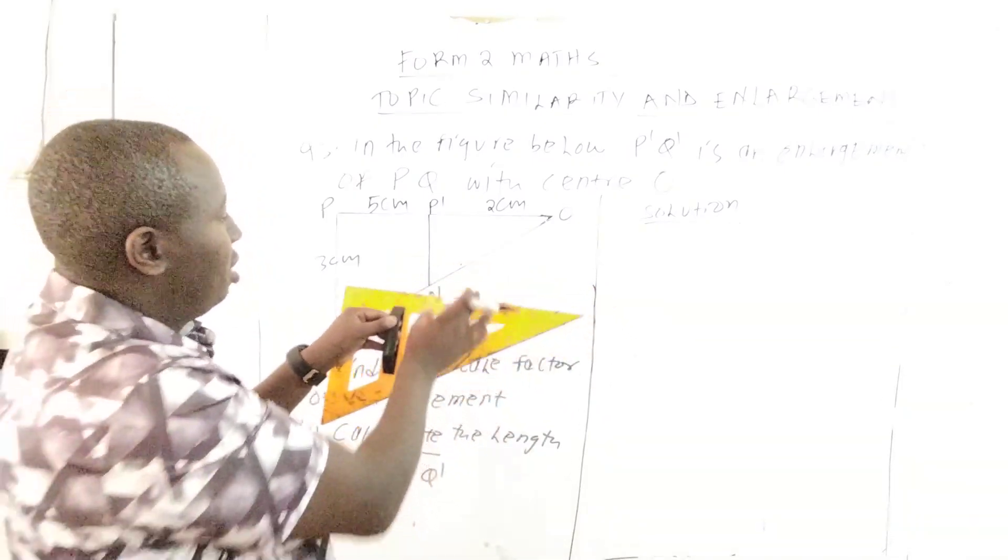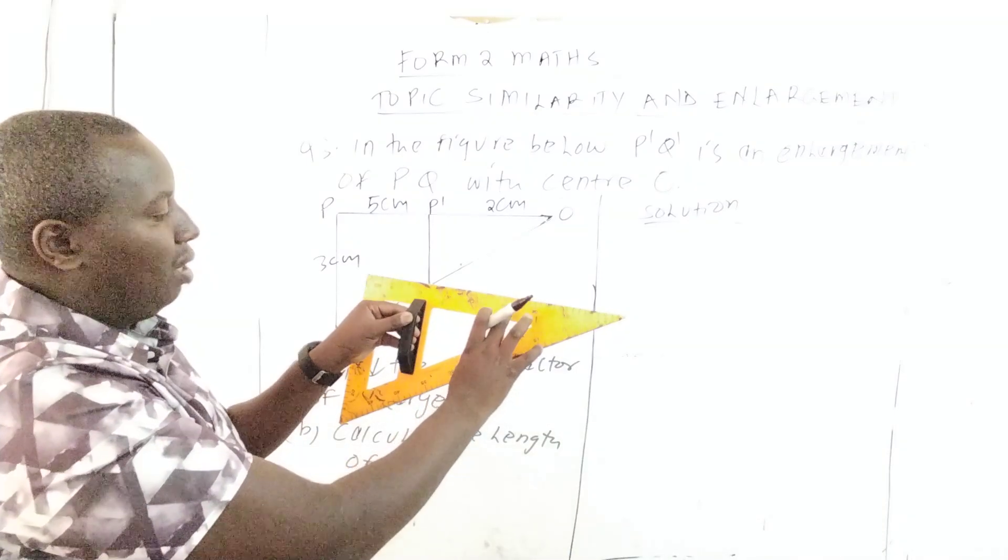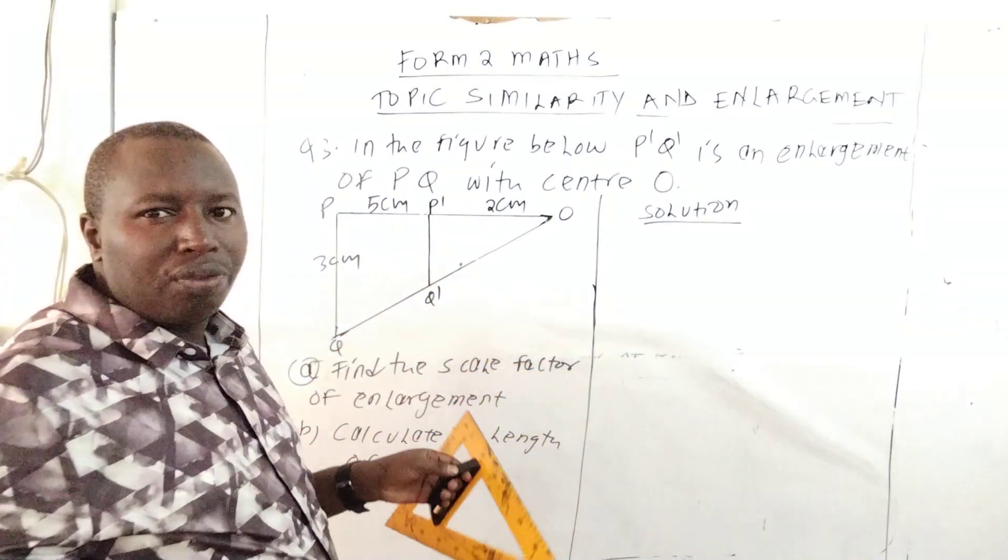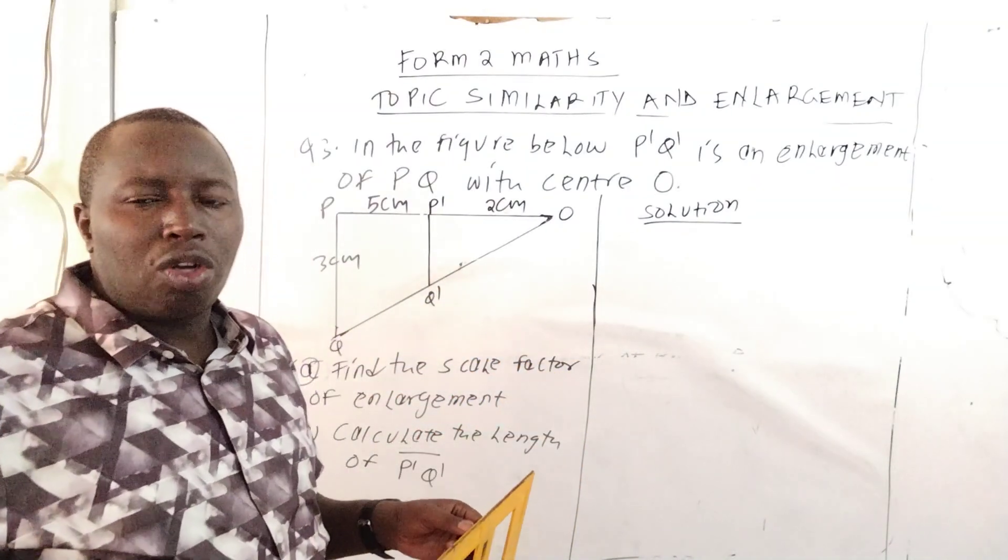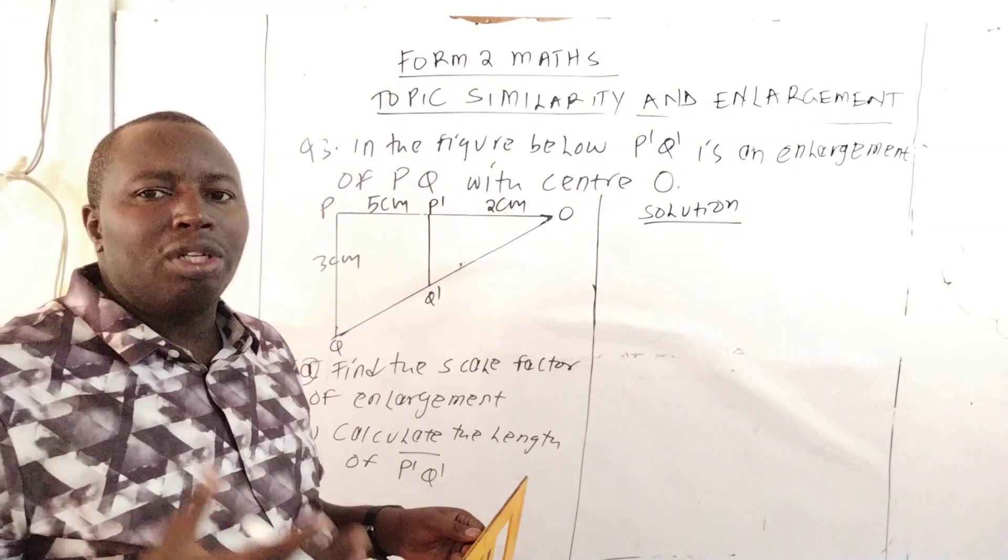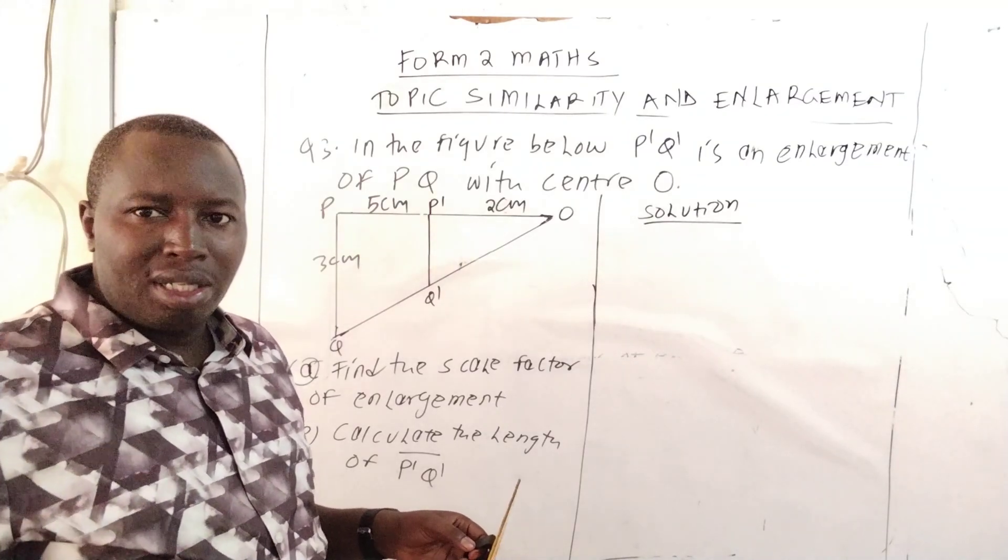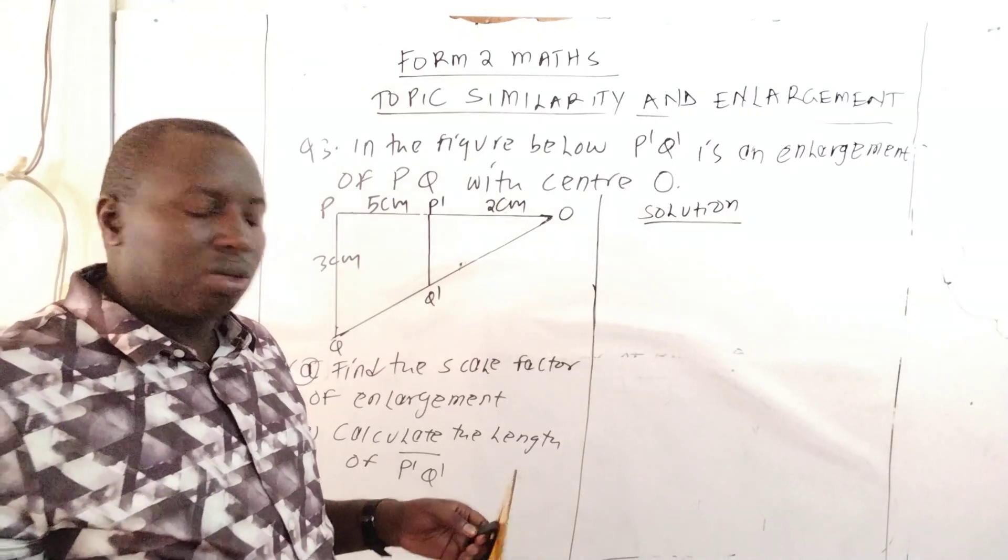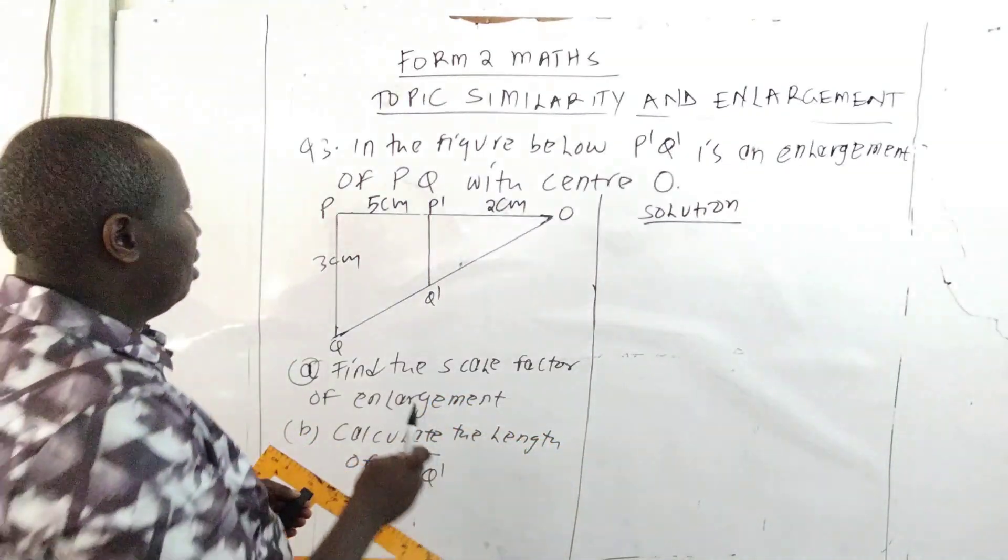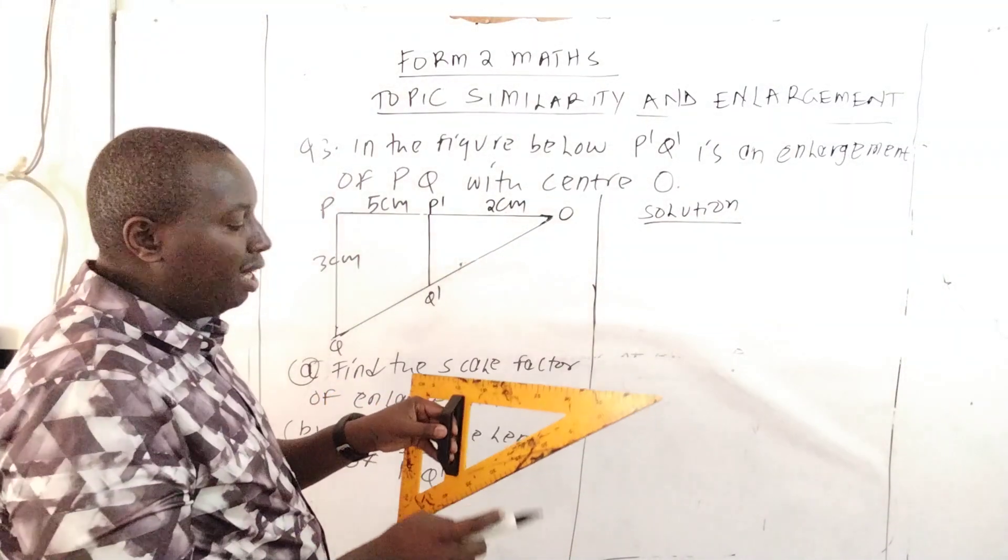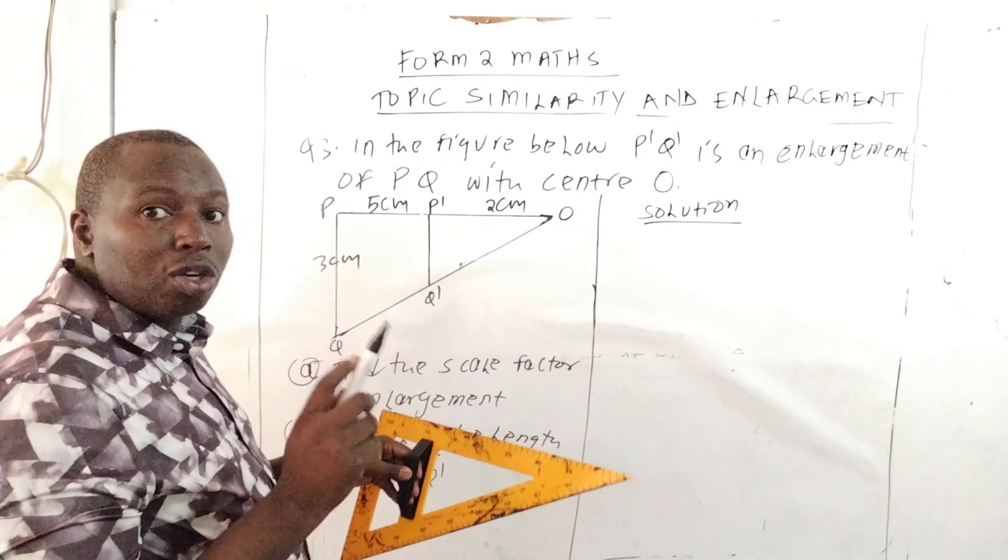When we deal with similarity, we talk of the same shape but different sizes - that's enlargement. Similarity and enlargement. Therefore, you compare the sides of the larger triangle and the small triangle, the corresponding sides.